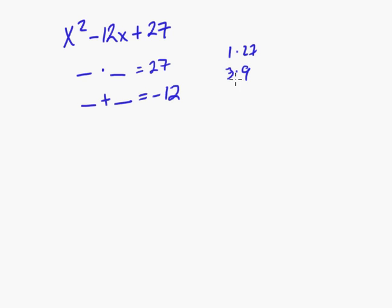Well, if we do negative 3 times negative 9, that's going to be 27 because negative times negative is positive. And then negative 3 plus negative 9 is negative 12. So whenever you have a negative b and a positive c, both of them are always going to be negative. In this case, we get (x - 3)(x - 9).